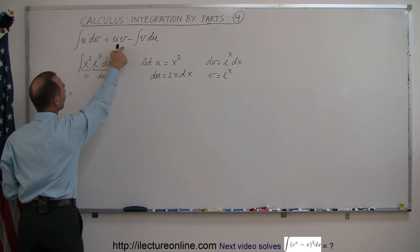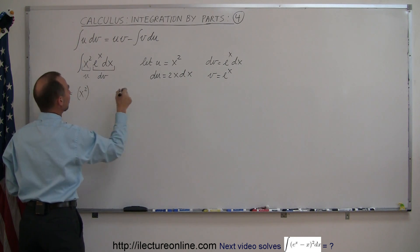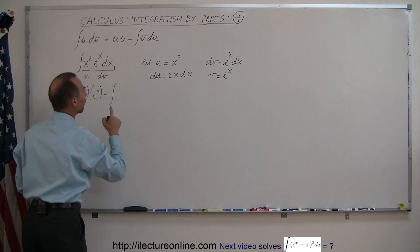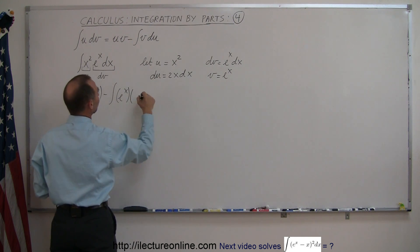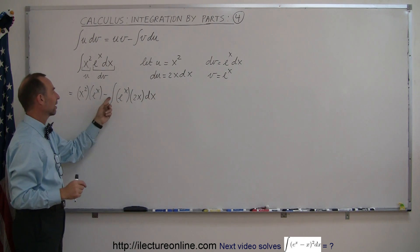So this is equal to u times v. So u is x squared, v is e to the x minus the integral of v du. And v is e to the x. And du is 2x times dx. And notice, we can always take the two outside the integral sign.